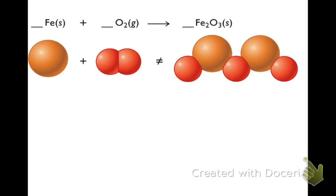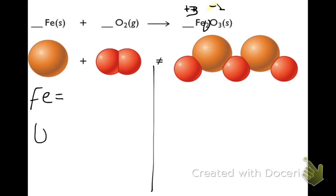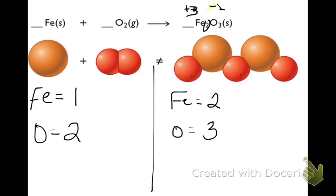Now let's do this for iron and oxygen producing iron three oxide. I know it's iron three oxide because oxygen has an oxidation state of negative two, and doing a reverse crisscross, iron must have been plus three. I'll count up the number of irons and oxygens — my inventory. I have one iron and two oxygens on the left. On the right hand side I have two irons and three oxygens. So I'm still not balanced — I don't have the same number of irons and oxygens on each side.